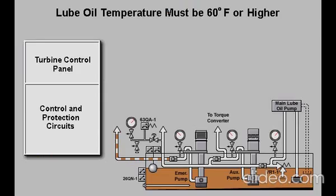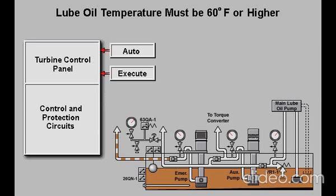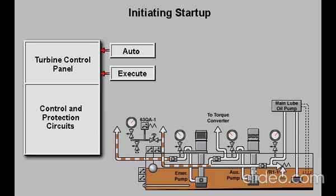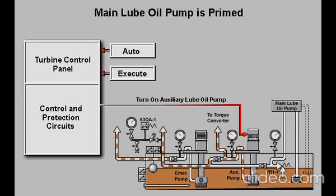During a normal turbine startup procedure, the lead operator will select Auto and execute on the operator interface of the turbine control panel. The protection system will check for a ready-to-start permissive from lube oil tank temperature switch 26QN-1. Turbine startup will not be permitted unless the oil temperature is 60 degrees Fahrenheit or higher. If all protection system checks are satisfactory, the auxiliary lube oil pump will start and the turbine will begin its crank cycle. The orifice check valve between the auxiliary pump discharge and the main pump discharge provides lube oil flow from the auxiliary pump to lubricate and prime the main pump at startup.